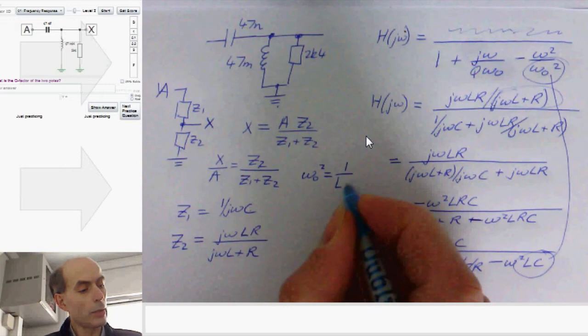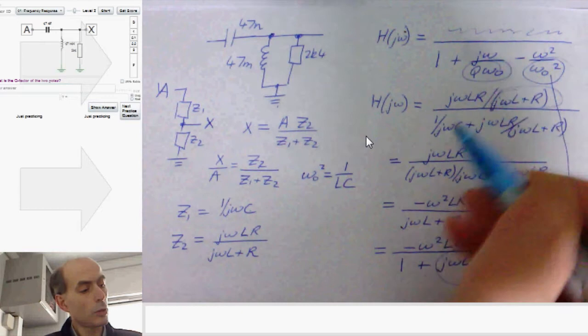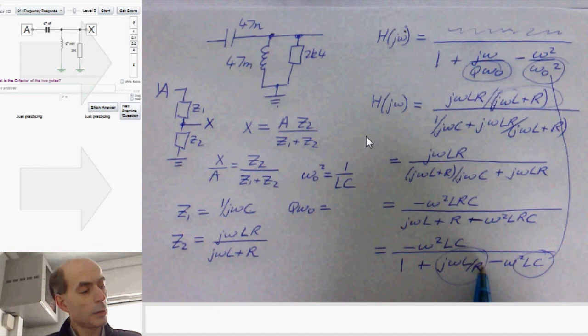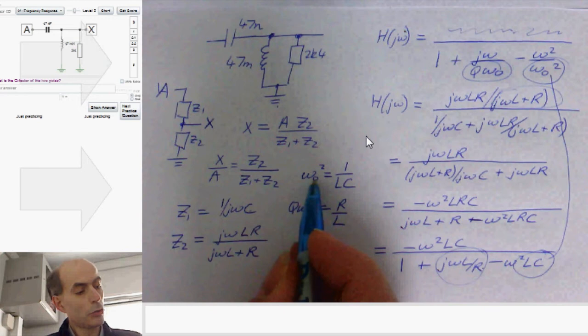And from this term here, we can note that Q times ω₀ must be R over L. Well, if ω₀ squared is 1 over LC, then ω₀ must be the square root of 1 over LC.